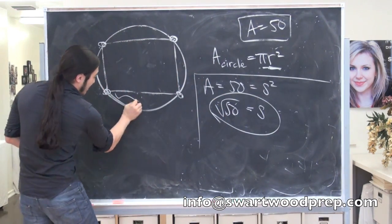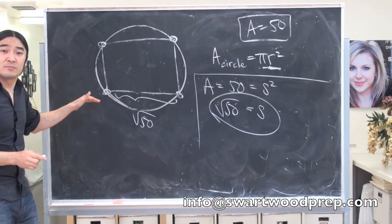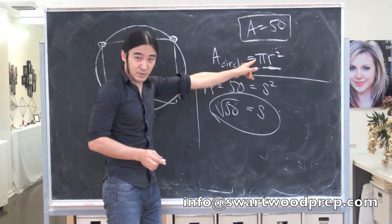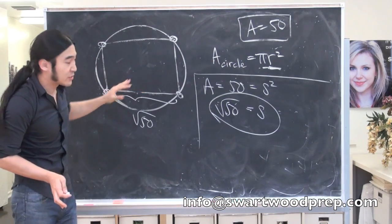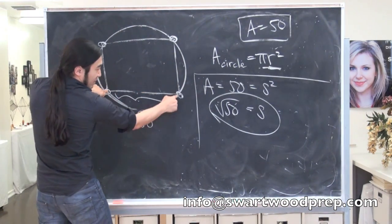So that tells me this right here is root 50. That's nice, but it's not getting me where I want. I want that radius, right? Maybe easier to visualize in this picture, the diameter. Let's go for that. So again, this would be root 50.